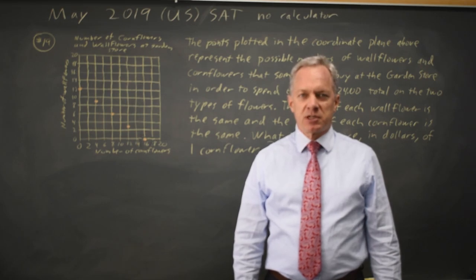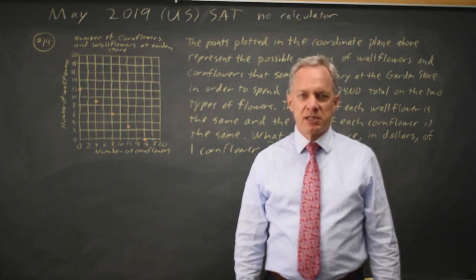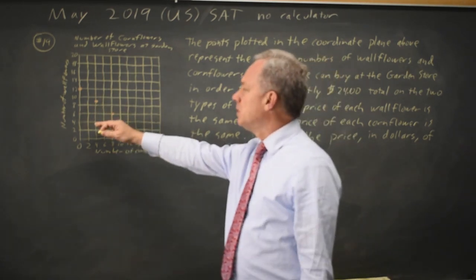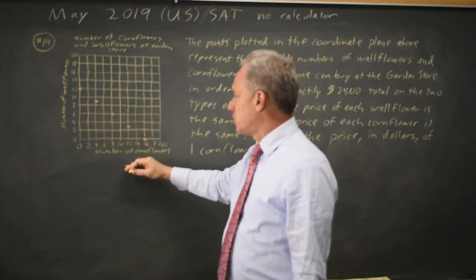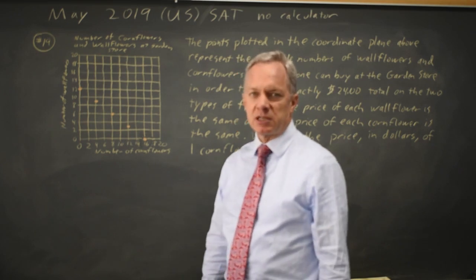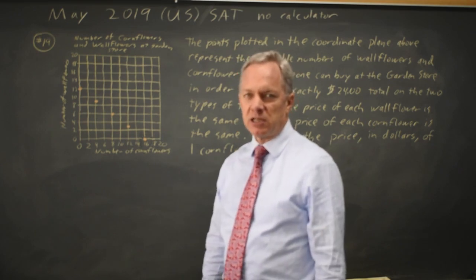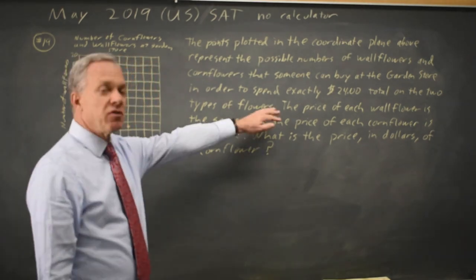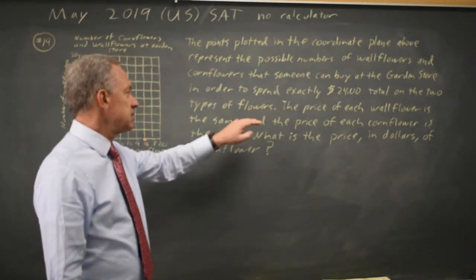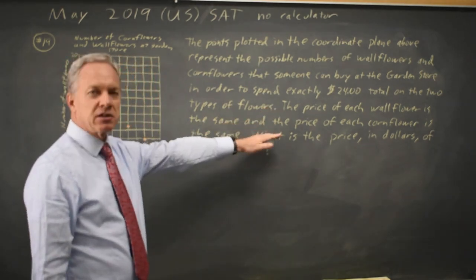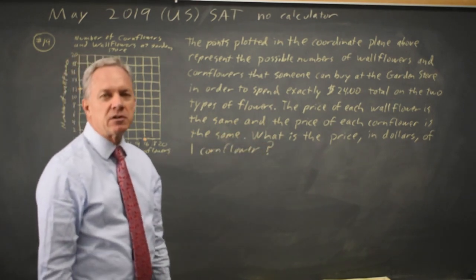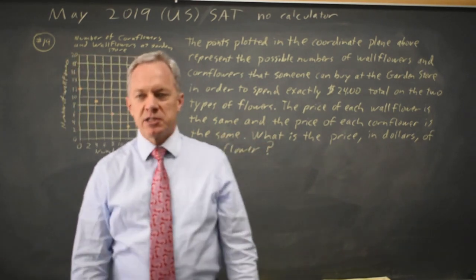This is non-calculator question number 19 from the May 2019 US exam. College Board gives us a graph showing the combinations of wallflowers and cornflowers that can be purchased for exactly $24 at the garden store. They ask: if each wallflower costs the same amount and each cornflower costs the same amount, what is the price in dollars of one cornflower?